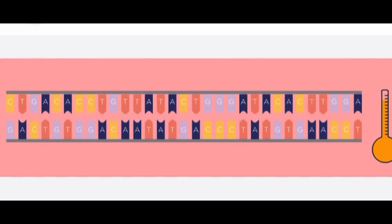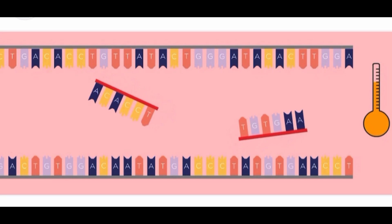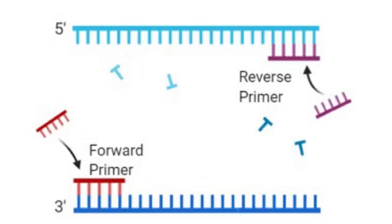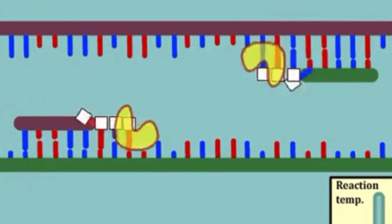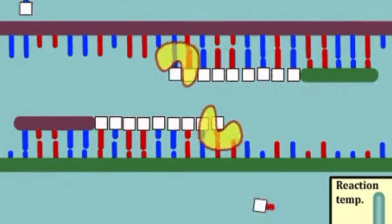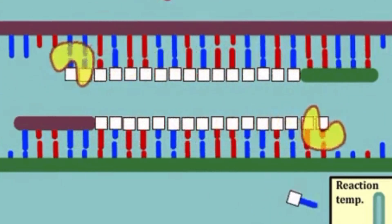First, denaturation: at 94 to 98 degrees Celsius, heat is provided. At this temperature, double-stranded DNA bonds break and separate into two strands. Next, annealing occurs at 52 to 68 degrees, where primers bind to the two DNA strands. Finally, extension occurs at 68 to 75 degrees Celsius, where dNTPs and DNA polymerase attach complementary base pairs. This process continues until both DNA strands are complete.